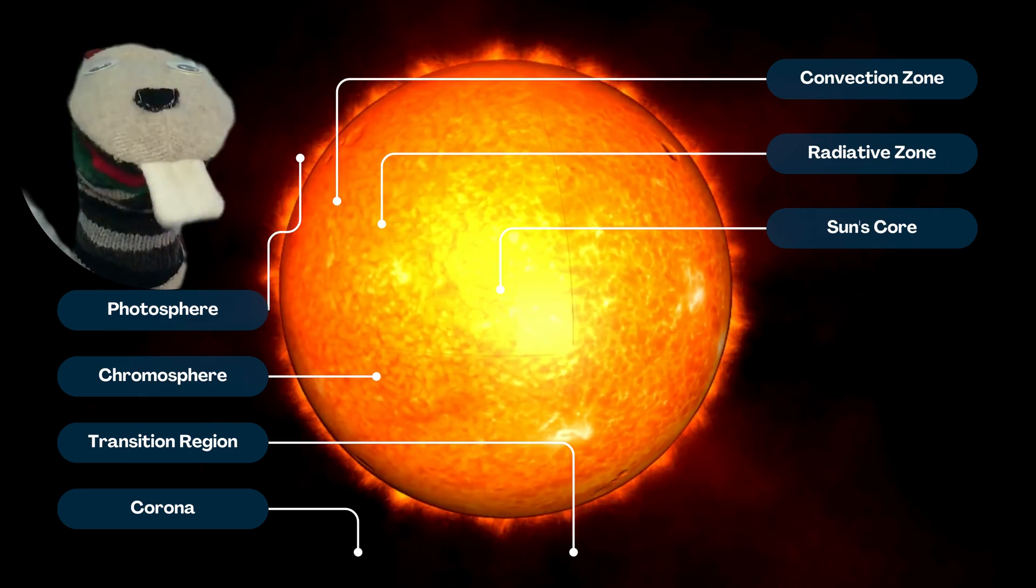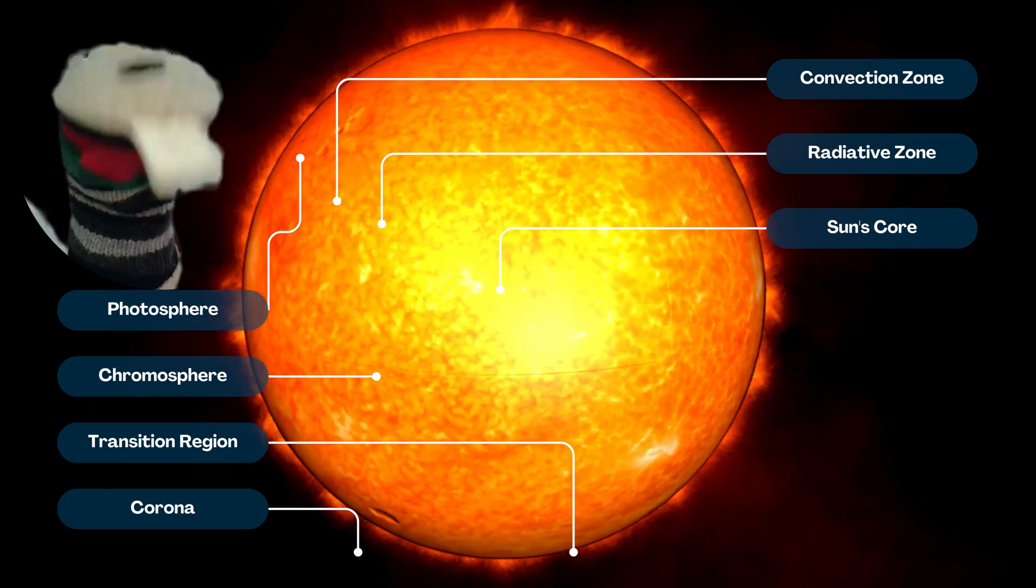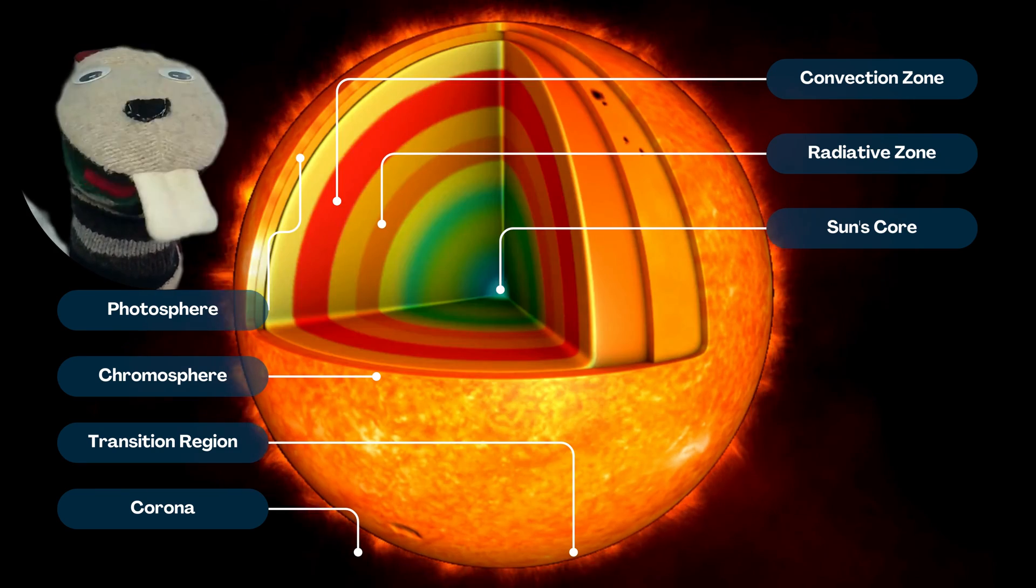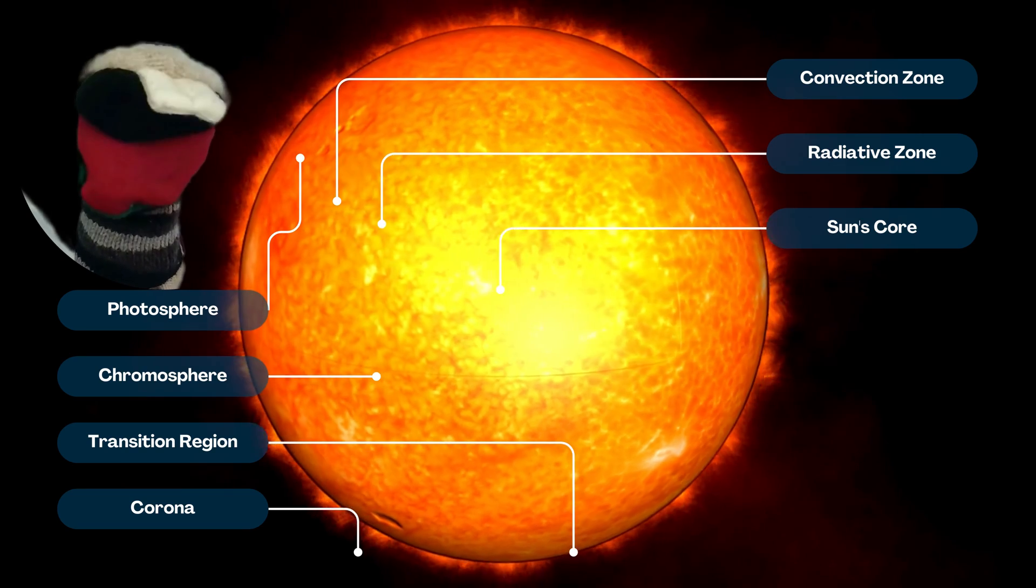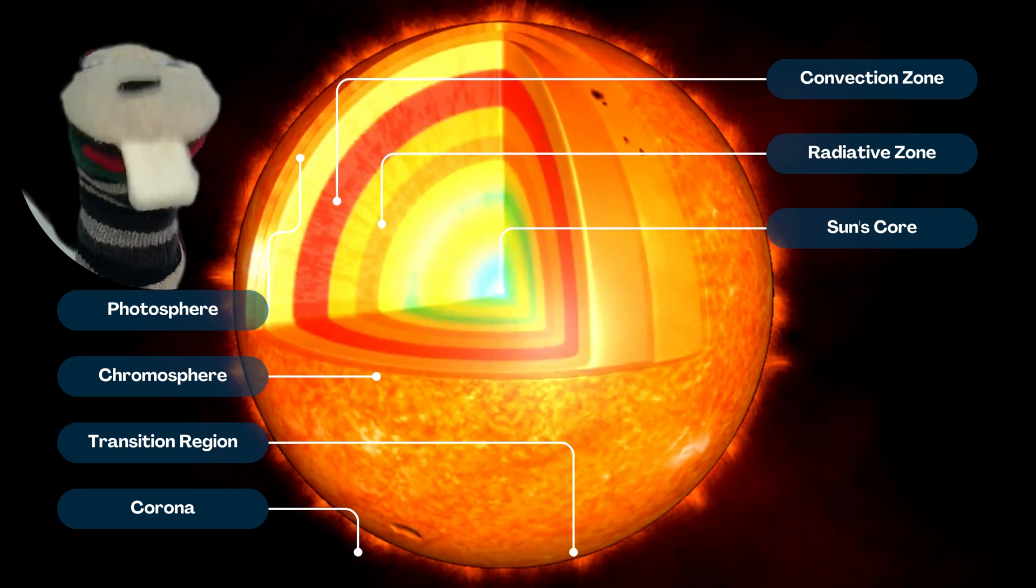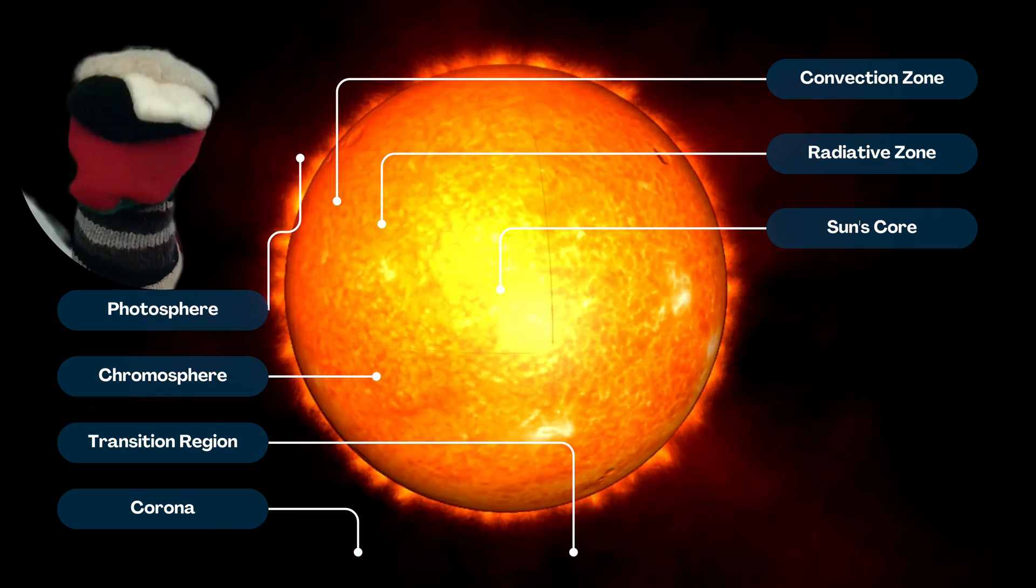Now you can see where it's pointing in the middle. That's the sun's core. Then it has a radiative zone, and then it has something called a convection zone.